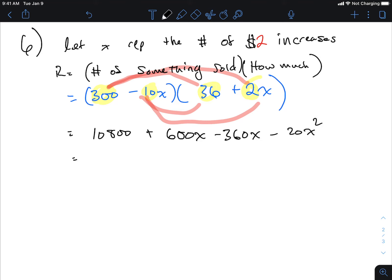600x minus 360x minus 20x squared. Collect the two terms in the middle and I'm going to rewrite this in descending order: negative 20x squared, 240x plus 10,800. What's next? Once you get to here, complete the square.